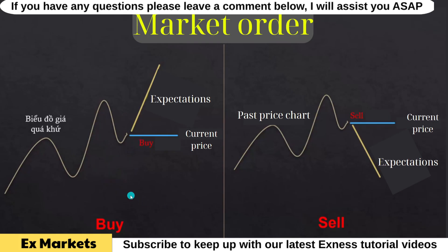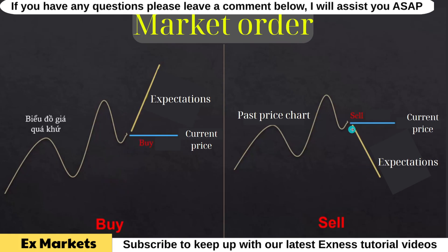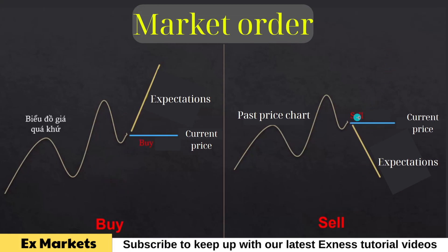For a buy order, if we anticipate that the product price will go up and the current price is already good, we will proceed to place a buy order immediately. If the product price does go up as expected, our order will be profitable. However, if the product price continues to go down, our order will incur a loss and we will need to cut our losses. If we anticipate that the product price is likely to go down and the current price is already good, we will proceed to place a sell order immediately. If the product price does go down as expected, that order will be profitable. If the product price continues to go up, that order will incur a loss.